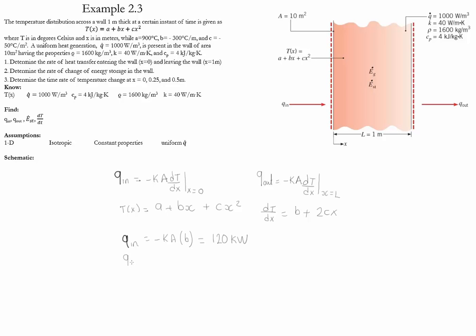Doing the same process to evaluate q_out, we simply say negative k, cross-sectional area A, and then it's going to be b plus 2cL. I evaluated the gradient at x is equal to L. By doing this evaluation, we could see that q_out is equal to 160 kilowatts. Please double check those values on your own.